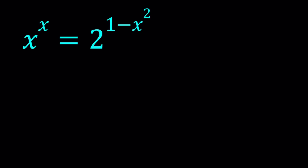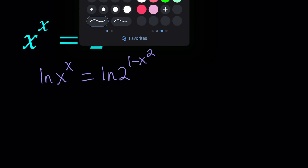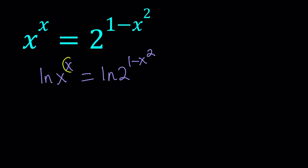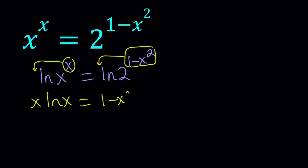Let's go ahead and start by ln-ing both sides. ln, by the way, is the natural logarithm, which is base e. So I'm going to take ln of x to the power x and ln of 2 to the power 1 minus x squared. By using properties of logs, we can move these powers to the front and multiply by them. So this becomes x ln x equals 1 minus x squared times ln 2.